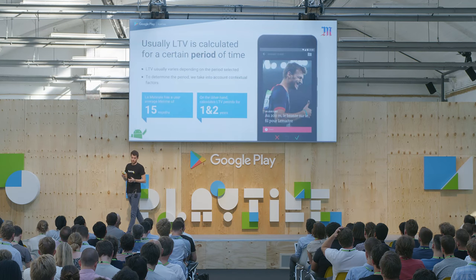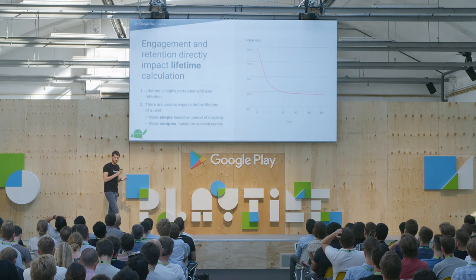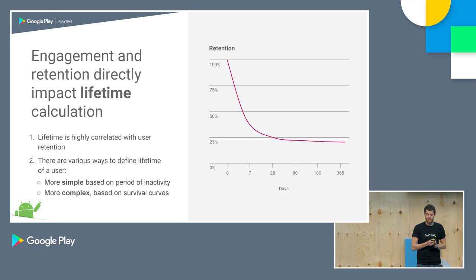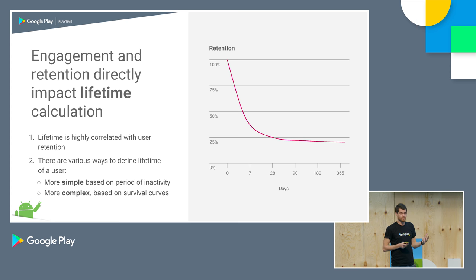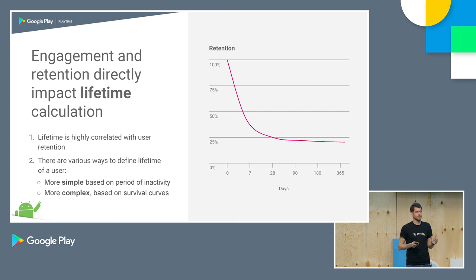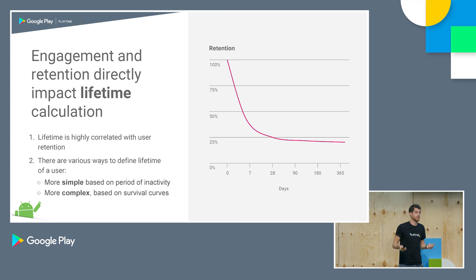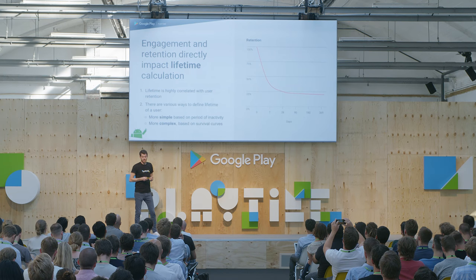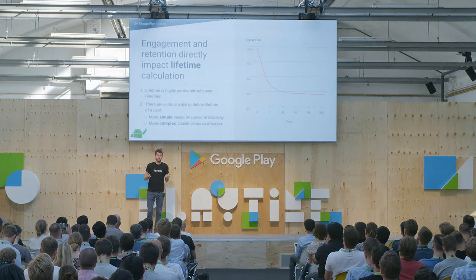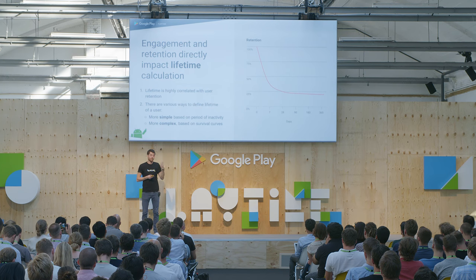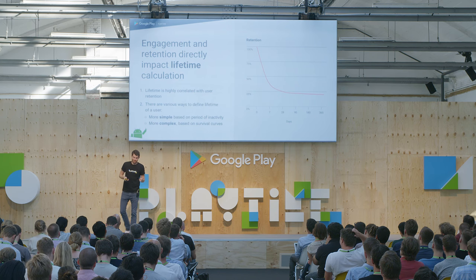That's a nice example. Now lifetime calculation — the retention survival curve. For lifetime, retention is critical because it tells you the opportunities you have to convert a user into a paying user. Lifetime is also highly correlated to engagement: the more engaged the user, the more likely they are to be retained and the more lifetime they will have. There are very simple models and very complex ones for calculating lifetime.